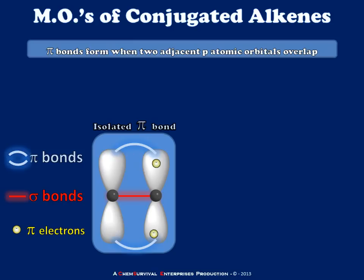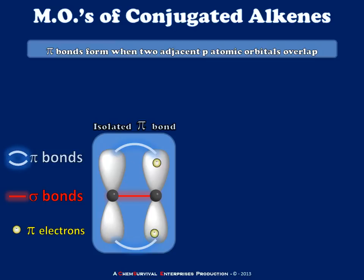I've shown the electrons here as just doing little laps around one side or the other, and we both know that that's not true. But this is a good way of conveying that there are two bonding electrons in motion within the space created by this overlap, and that is in fact the result of the pi bond.